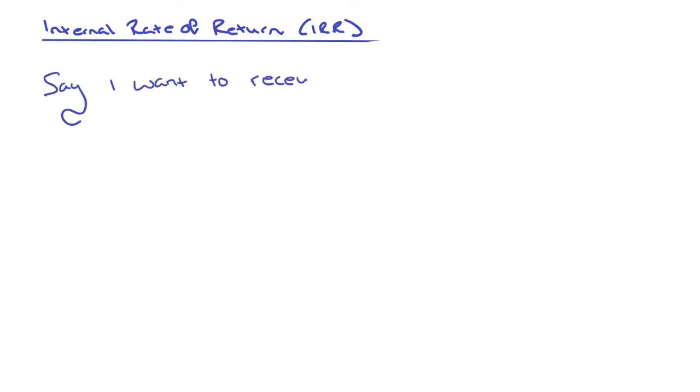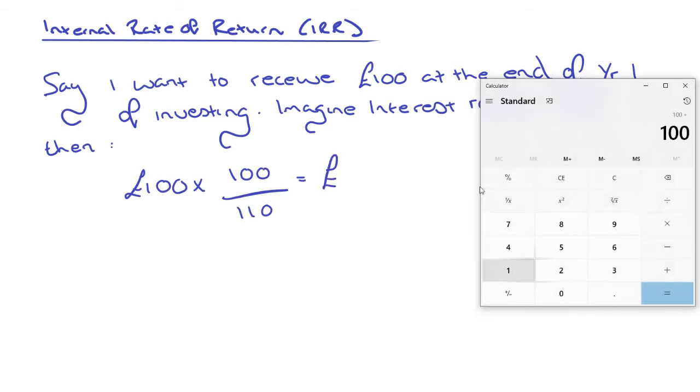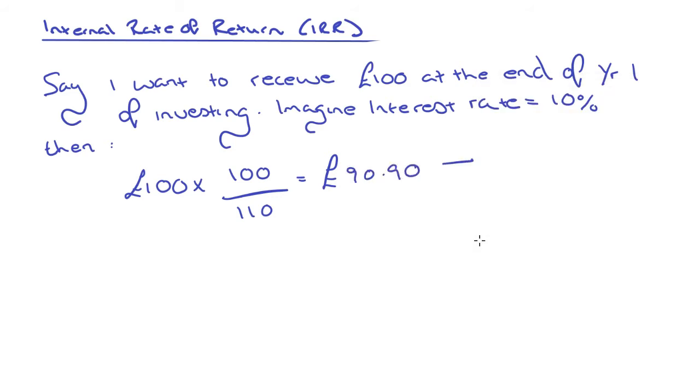Say you want to receive £100 at the end of year one of investing, and the interest rate is 10%. If I want to work out how much I need to invest to achieve £100 at year one, there's a formula: take the £100 that I want to achieve, times by 100, divided by 110, because the 110 takes into account this 10% interest rate. That gives me £90.90. So my future cash flow would be £100, but the £90.90 would be the present value. At year zero I'm investing £90.90, in year one I'd achieve £100, and in year two I would achieve £110.